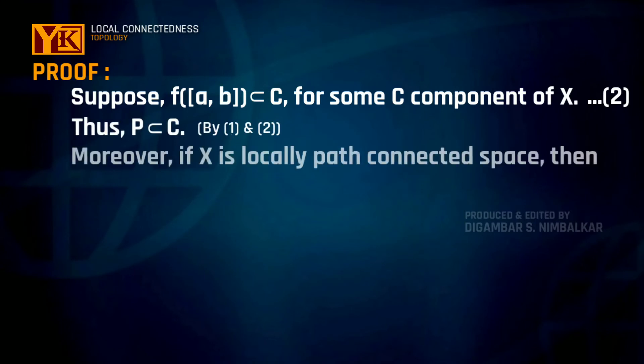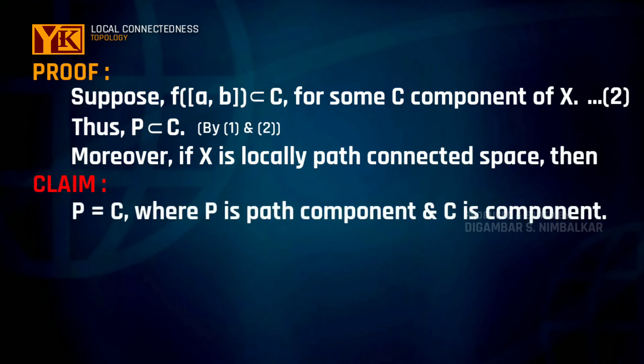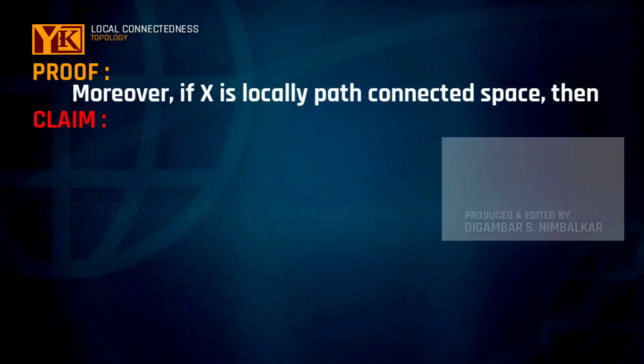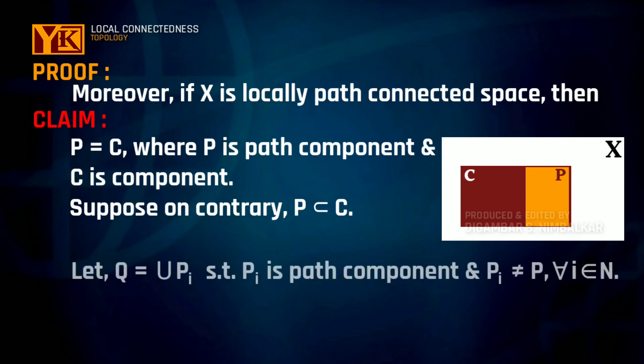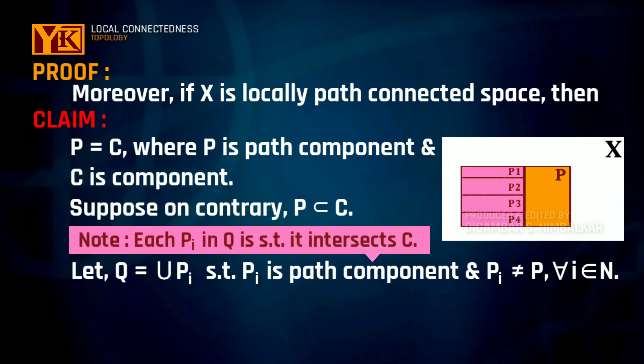And moreover, if we consider X is locally path connected, then what will be our claim? Path component P equals component C. Suppose on the contrary that P is properly contained inside C, and let Q denote the union of all components of X that are different from P and that intersect C.